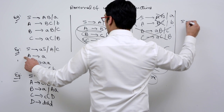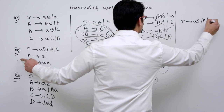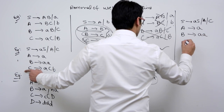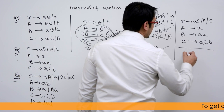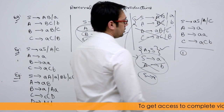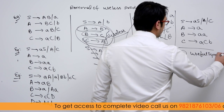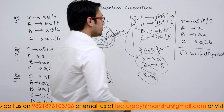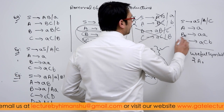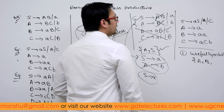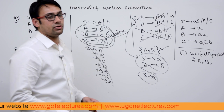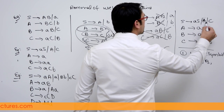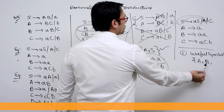Now let us check the second grammar: S derives AS or A or CA, A derives small 'a', B derives A, and C derives ACB. Step 1: find all the useful symbols — those which are directly generating a terminal. A is directly generating a terminal, so A is a useful symbol. B is directly generating a terminal, so B is a useful symbol. Now check if any right-hand side is made up only of A and B. The production for S is only made up of useful symbols, so S is also a useful symbol.